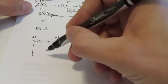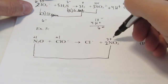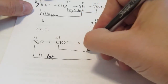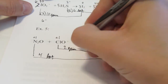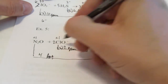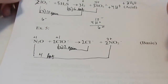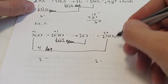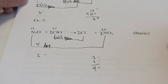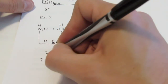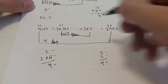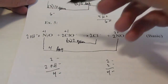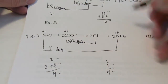Nitrogen goes from +1 to +3 — each one loses two, but two of them do that, so four are lost total. Chlorine goes from +1 to −1 — two are gained. Let's double the chlorine-containing species. Electrons gained and lost are equal. Let's balance the charge: two negatives on this side, and two negatives plus two more negatives gives four negatives on the right side. So we're going to add two hydroxides because it's a basic solution. I'll write in two hydroxides.